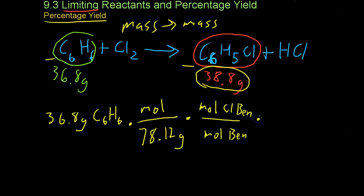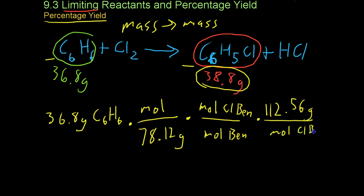Finally, you multiply by the molecular mass of chlorobenzene in order to get the expected yield. The molar mass of chlorobenzene is 112.56 grams for each mole of chlorobenzene. Once again, the moles cancel with the moles, and you end up with grams at the end.